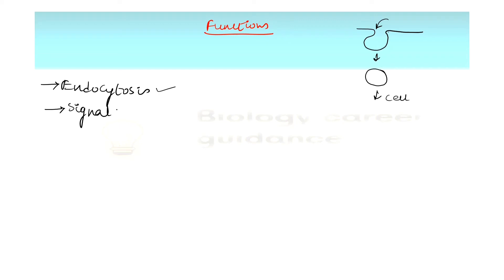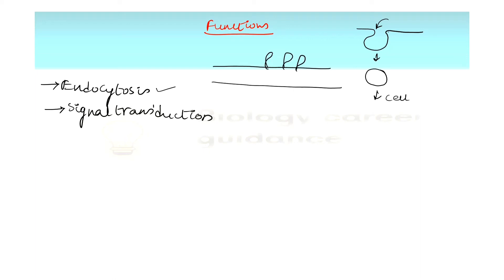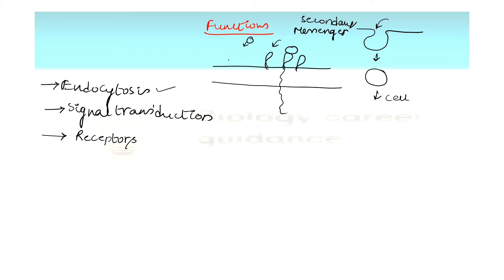The second function is signal transduction. For example, suppose there is a plasma membrane with an extracellular signaling molecule such as a hormone. This molecule binds to a receptor. The receptors for different signaling molecules are present on lipid rafts, so lipid rafts facilitate cell signaling.